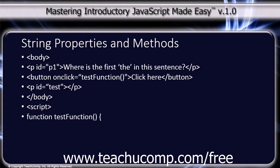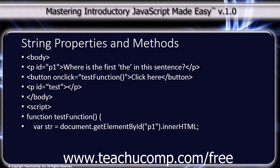Function testFunction(), open and close parentheses, open curly bracket. var str equals document.getElementById('p1').innerHTML; semicolon.